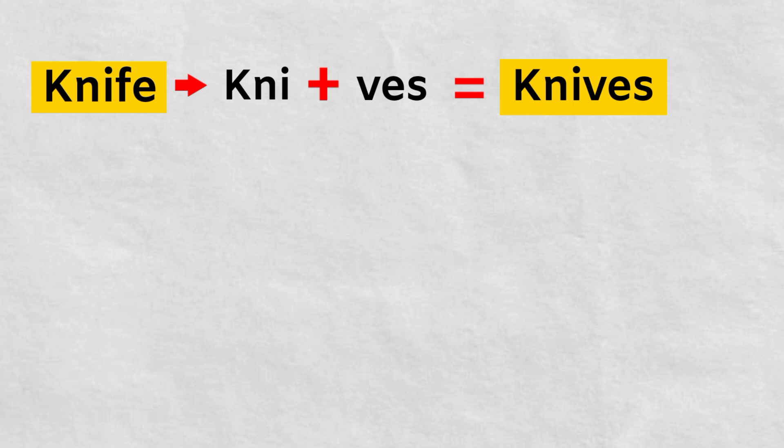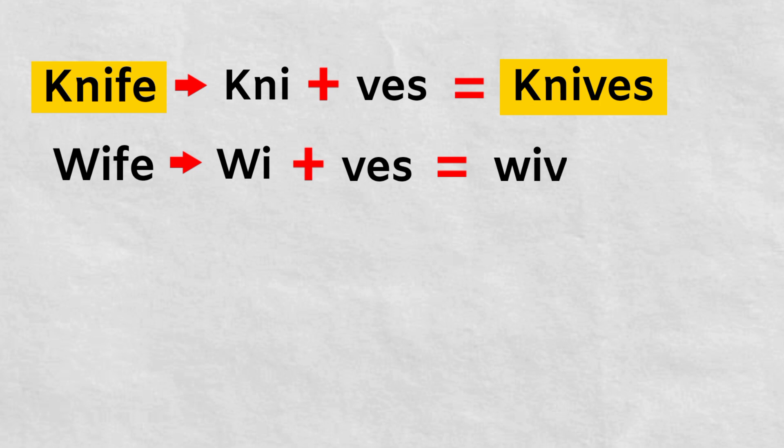Let's take another example. Wife. The last two alphabets are FE. So what will we do? We will remove FE and we will add VES to make it into its plural form. Wives. W-I-V-E-S. Wives is the plural form of wife.